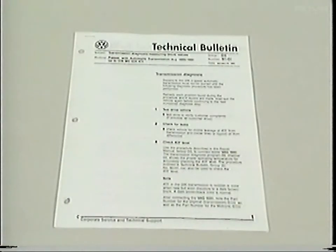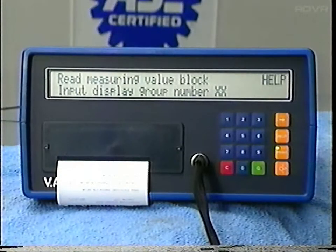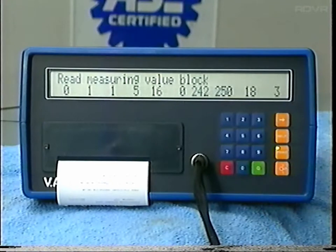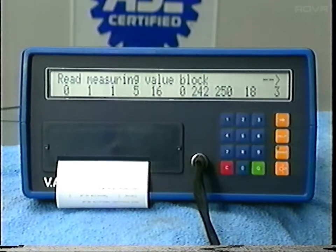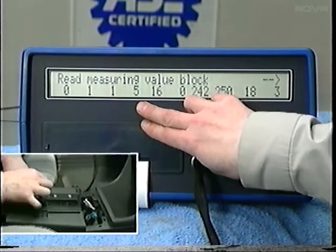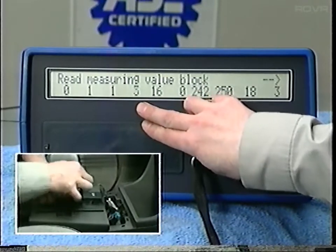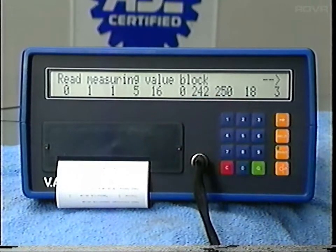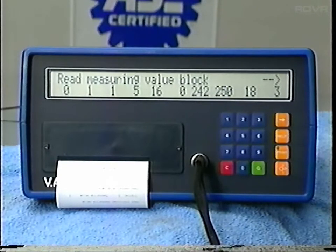The display group numbers are listed in the D3 diagnosis technical bulletin and the repair information. If you enter display group number 00, the display will show you 10 values that represent the operating condition of the transmission components. For example, one value is for the selector lever position — if you move the selector lever, the number will change. Check the values you get on the 1551 against what's specified in the repair information.